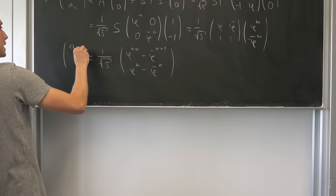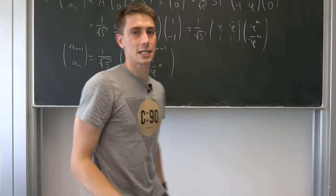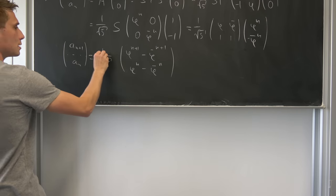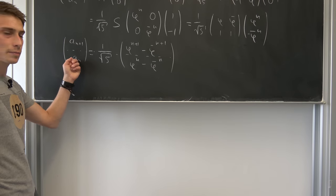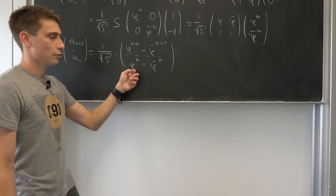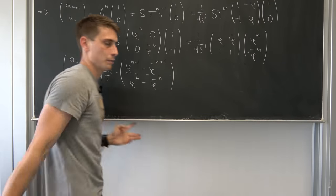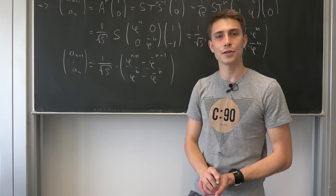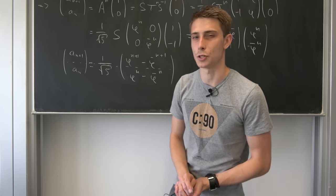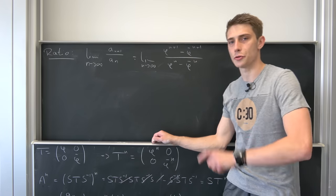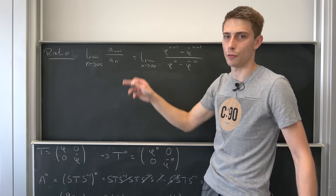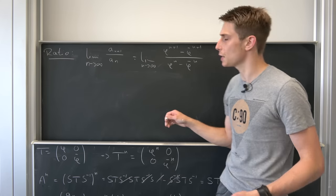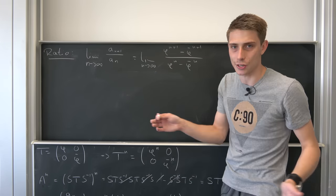We have found expressions for a_{n+1} and a_n. Reading off one line: a_n is nothing but (1/sqrt(5)) times (phi^n minus phi_conjugate^n). And a_{n+1} = (1/sqrt(5)) * (phi^{n+1} - phi_conjugate^{n+1}). One famous exercise is to find the limiting ratio between a_{n+1} and a_n. The 1/sqrt(5) is a common factor so it cancels out.